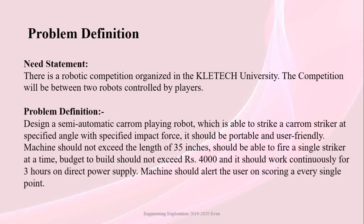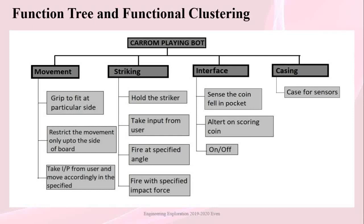These are the main features required in our project. The function tree classifies the Karam playing robot into 4 parts: movement, striking, interface, and casing. In the movement part, we need to grip and fit the device at a particular side of the board, restrict movement only up to that side, and take input from the user to move accordingly.